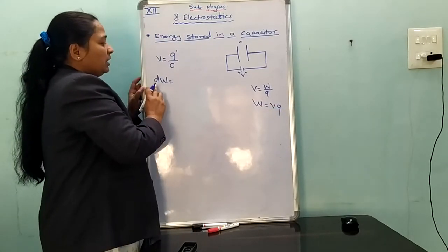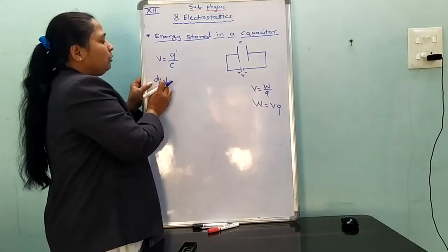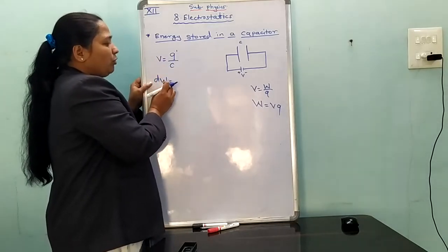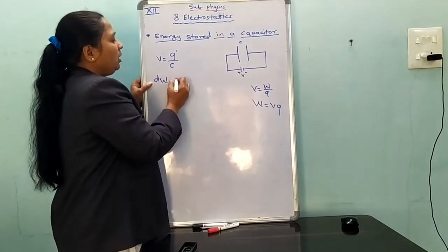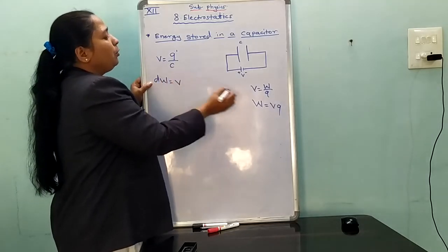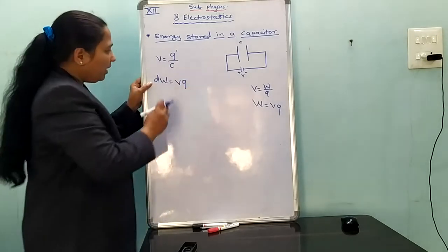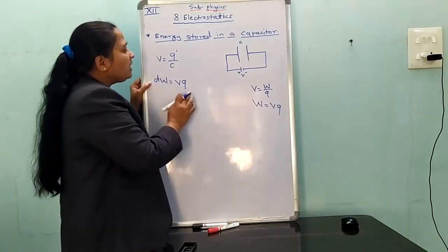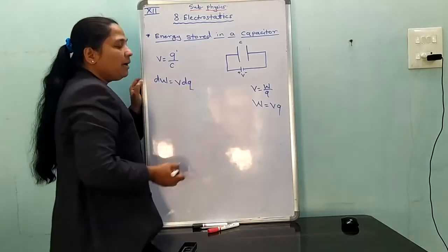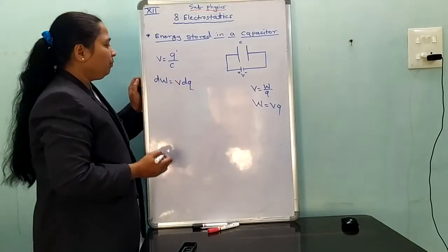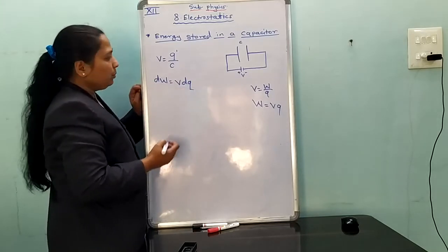But since the charging process is not completed, only a small amount of work is done to bring a unit positive charge. Therefore, DW is equal to V into DQ, where DQ is the small charge transferred.